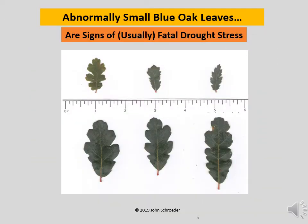This image shows two sets of blue oak leaves. The small, stunted ones at the top are taken from a tree that has been adversely affected by a water shortage. Trees containing mostly stunted leaves like these will probably not survive. The larger group at the bottom are taken from healthy blue oaks and are shown for contrast.